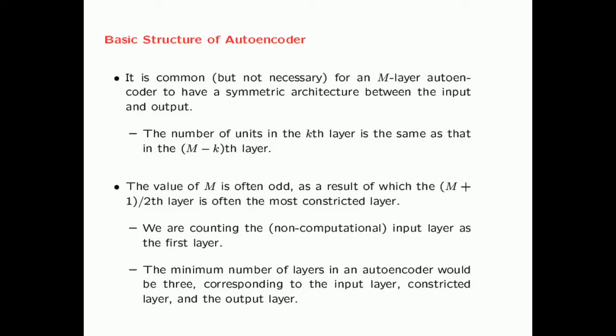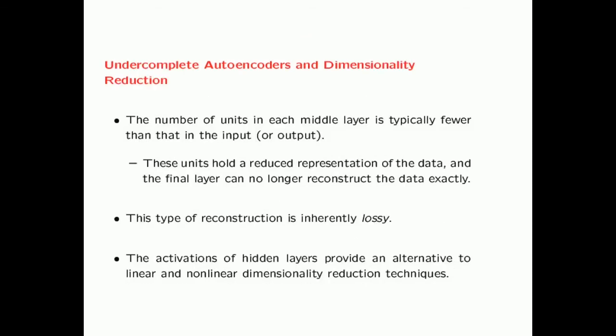Looking at the basic structure of an autoencoder: it is common but not necessary for an N-layer autoencoder to have a symmetric architecture between the input and the output, where the number of units in the kth layer is the same as in the (N-k)th layer. The value of N is often odd, making the (N+1)/2th layer the most constricted. Note that we count the non-computational input layer as the first layer, so the minimum number of layers in an autoencoder is 3 — the input layer, the constricted layer, and the output layer — which can represent singular value decomposition.